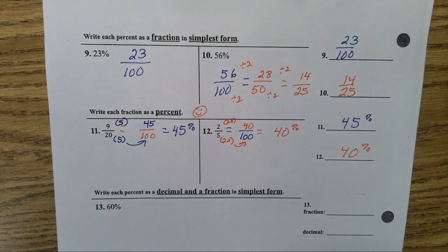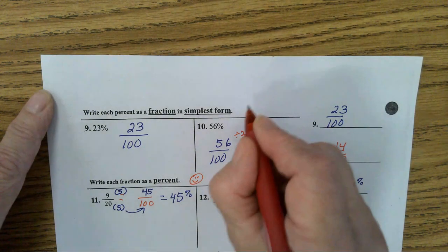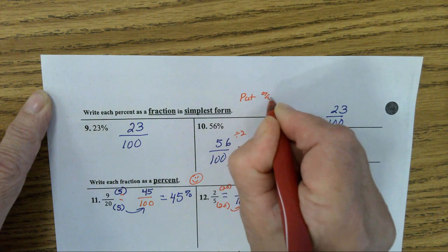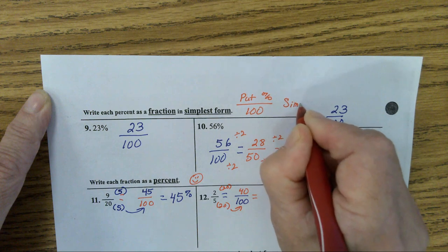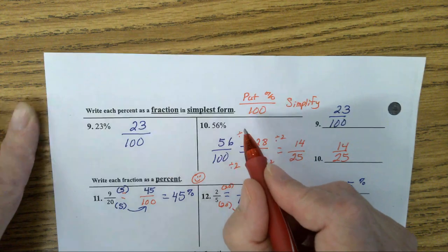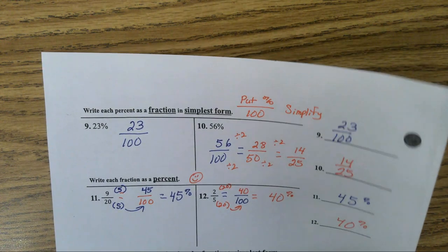All right. Up here, how do you change a fraction in simplest form? Put it over one hundred. Put percent over a hundred and then simplify. Okay. So, those are the notes for how do you change a percent to a fraction. Now, let's look at thirteen and fourteen.